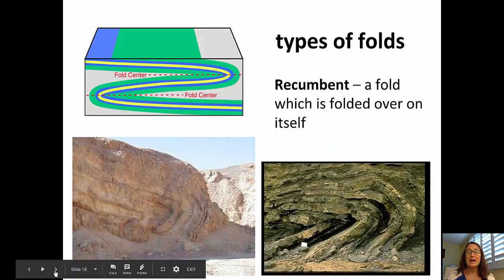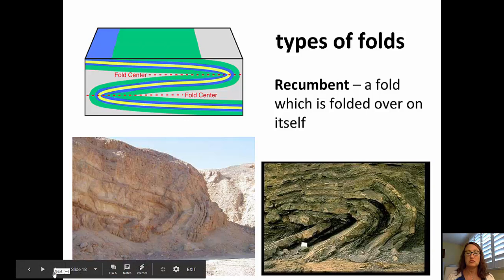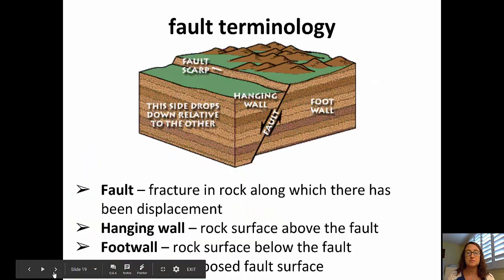Sometimes folds are actually folded over on top of themselves — we call that a recumbent fold. We see examples of two recumbent folds in these pictures.